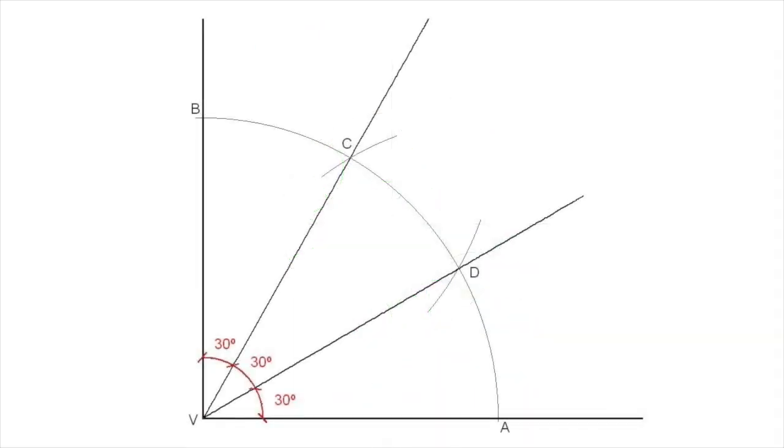Angle trisection was one of these outstanding conundrums. Given an arbitrary angle, is it possible using just a straight edge and compass to divide it into three equal parts? Some angles, such as a right angle, are easy to trisect in this way.